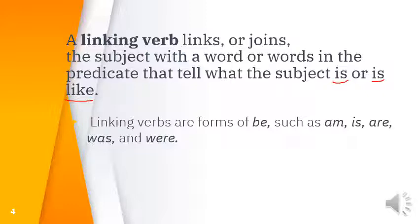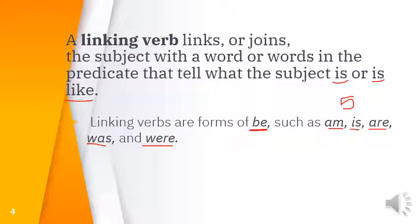Linking verbs are forms of 'be.' The five forms of be are: am, is, are in the present, and was and were in the past. If you see any of these five verbs, these are your very famous five linking verbs — and you should know them very well.